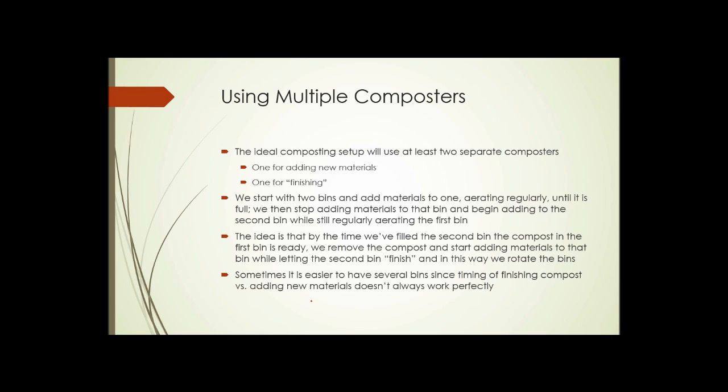Using multiple composters. As I mentioned before, you really need two separate containers. One for adding new materials, and one for finishing. You start with two bins, add materials to one, aerating it regularly until it's full. At that point, you stop adding new materials to the bin and begin adding materials to the second bin, but you still keep aerating the first bin on a regular basis. The idea being that by the time we have filled the second bin up, the first bin will be finished, and we can remove that compost, start using that first bin again to add new material, and let the second bin cook.